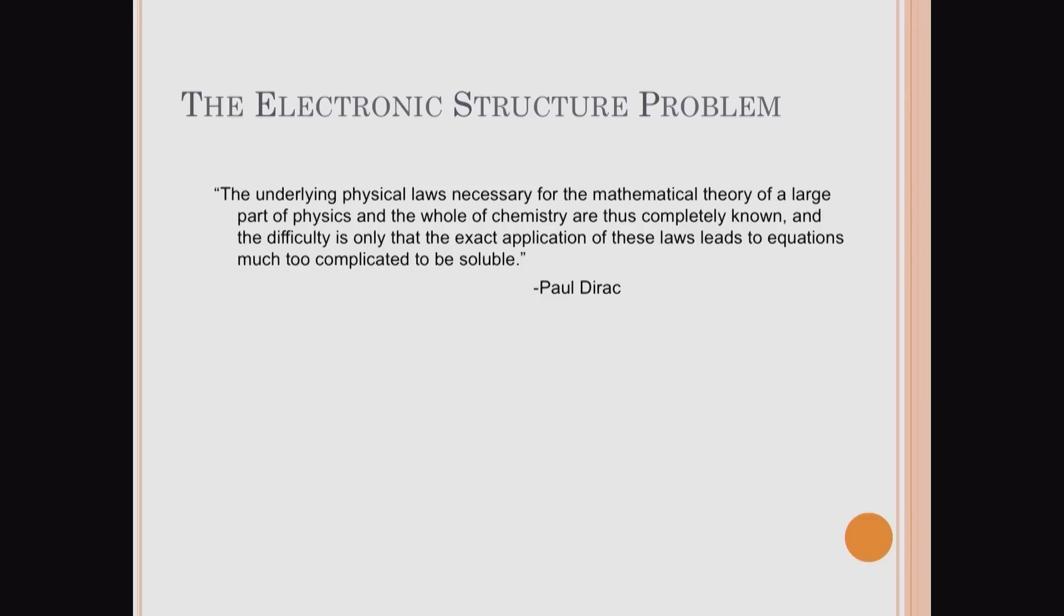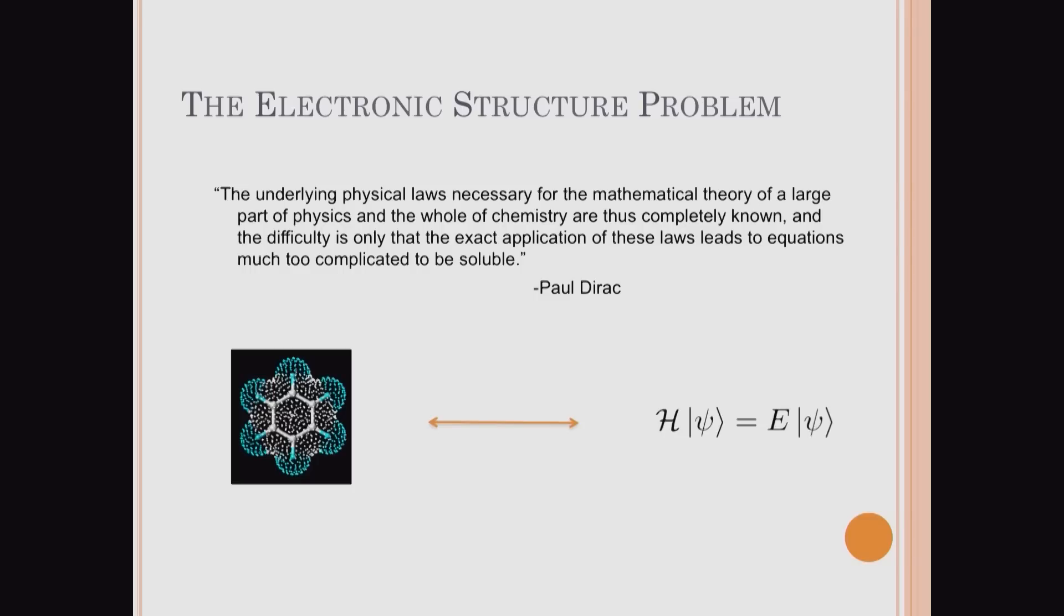And quantum chemistry turns out to be a very tantalizing problem for an interesting reason, which is that we've already solved it, at least in principle. So there's a famous quote by Paul Dirac that often gets said in talks like these: the underlying physical laws necessary for the mathematical theory of a large part of physics and the whole of chemistry are thus completely known. And the difficulty is only that the exact application of these laws leads to equations much too complicated to be soluble. And so the equation he's referring to is the Schrödinger equation.